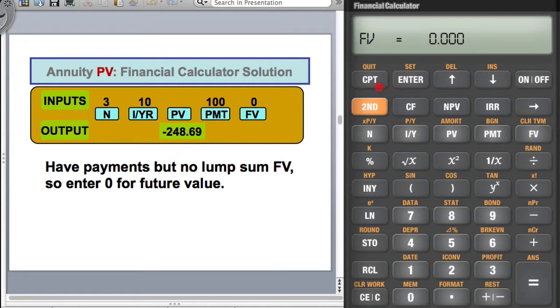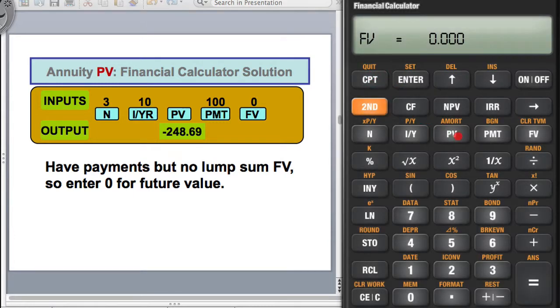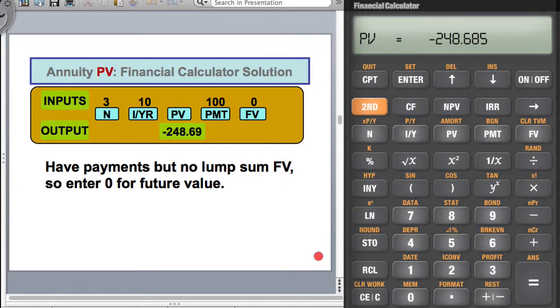Once you have that, then you do compute present value, and there you go. You get $248.68, and actually 0.685 cents. It basically means that you can deposit $248.69 in a bank which offers you 10% a year for the next three years. And you can withdraw $100 at the end of each year. And at the end of the third year, you'll have nothing remaining in the account.